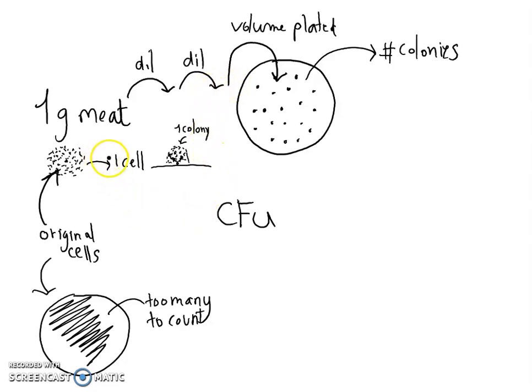In my previous video on meat lab and serial dilution, I was explaining how the purpose of this lab was to identify how many original cells we had in our one gram of meat. If we looked at these cells directly, there were just too many of them.